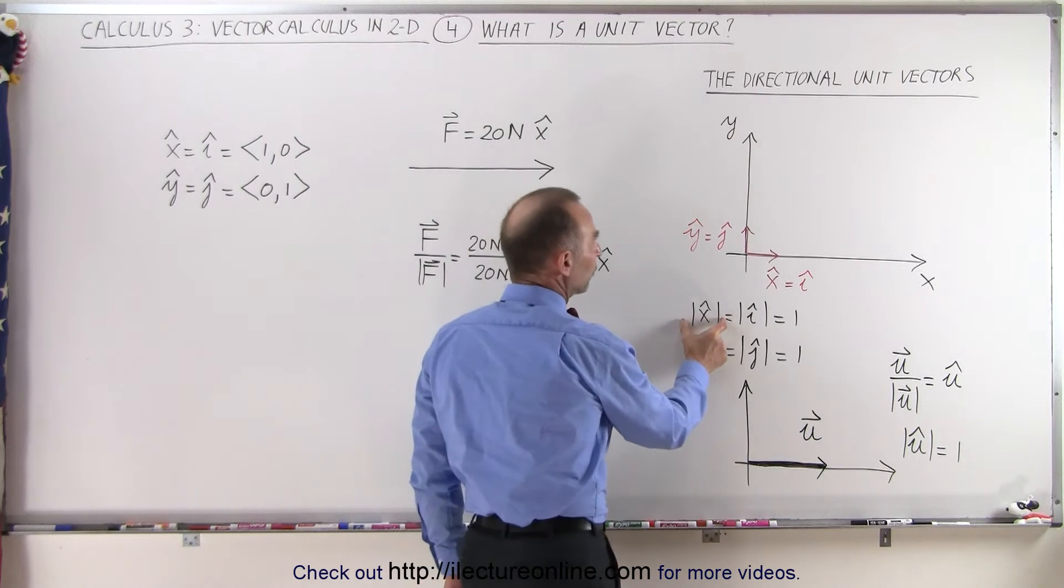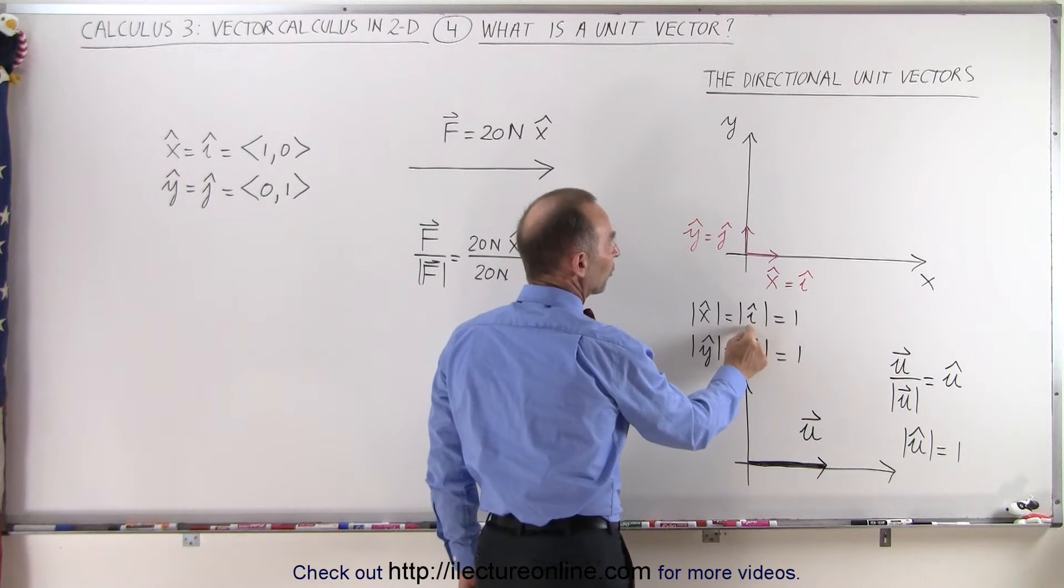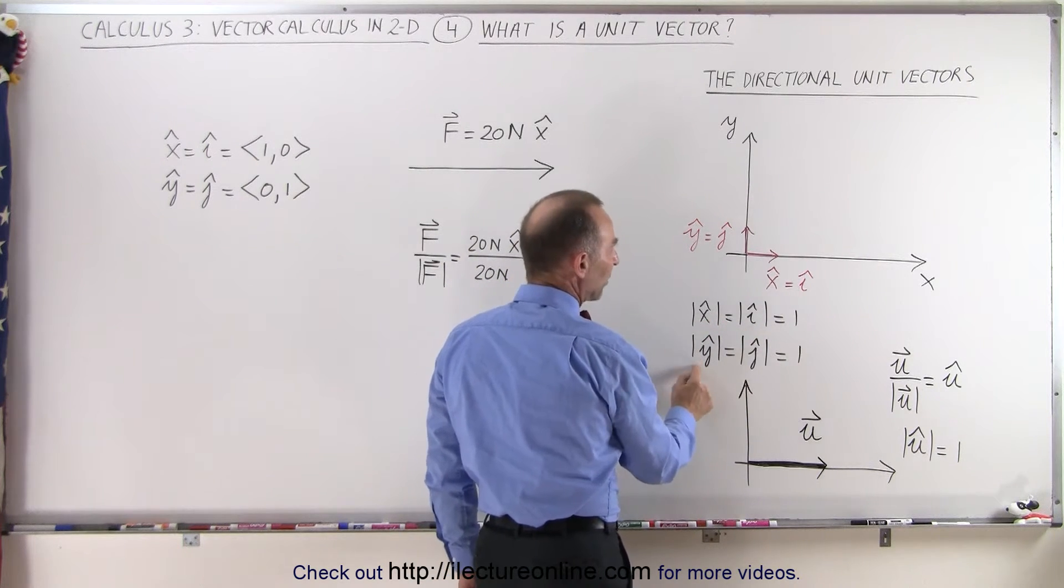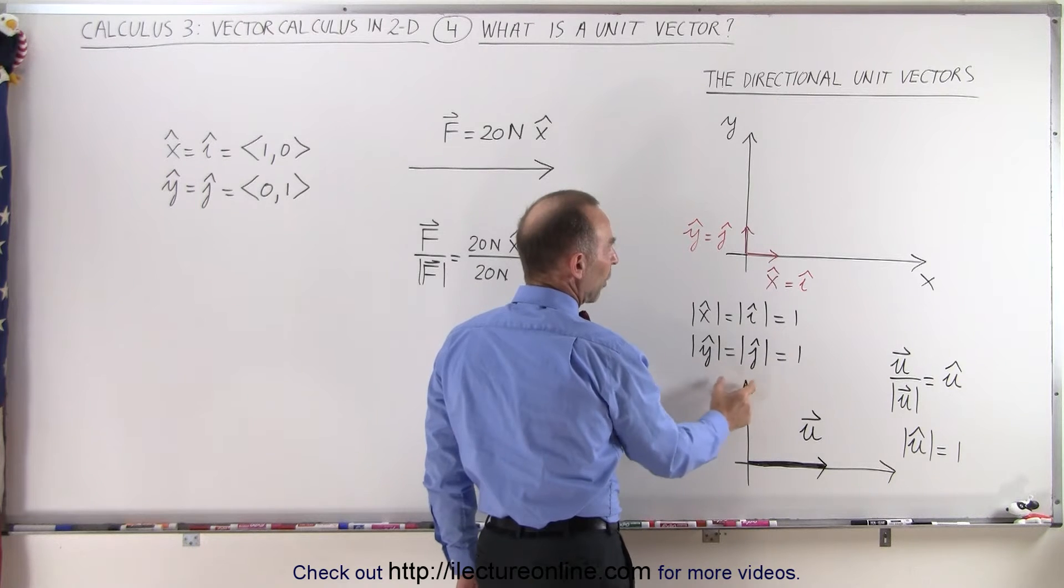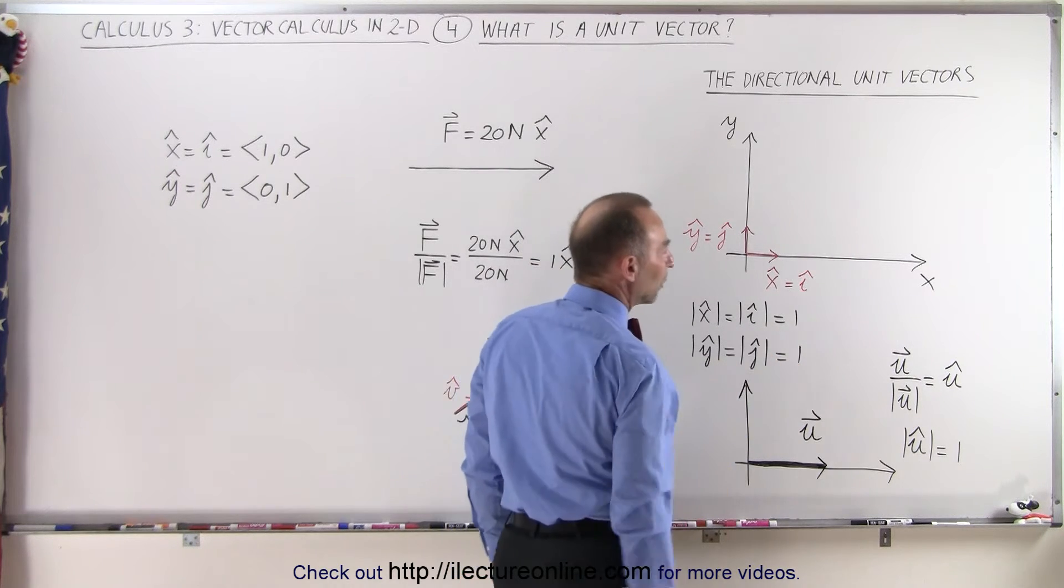Notice that if I take the magnitude of the unit vector x or the magnitude of the unit vector i, I get 1. Same if I take the magnitude of the unit vector y or the unit vector j, I get 1 as well.